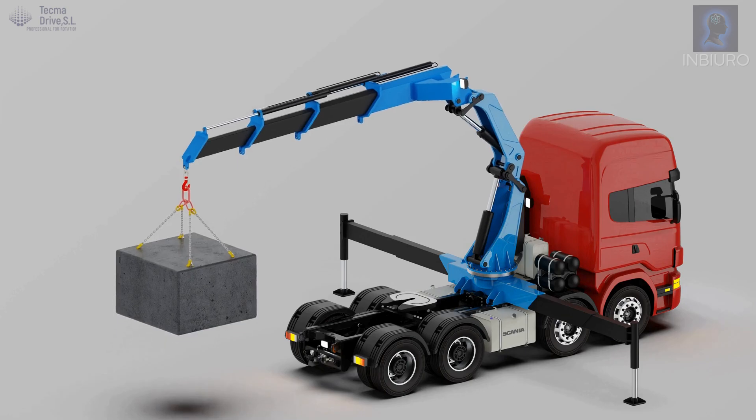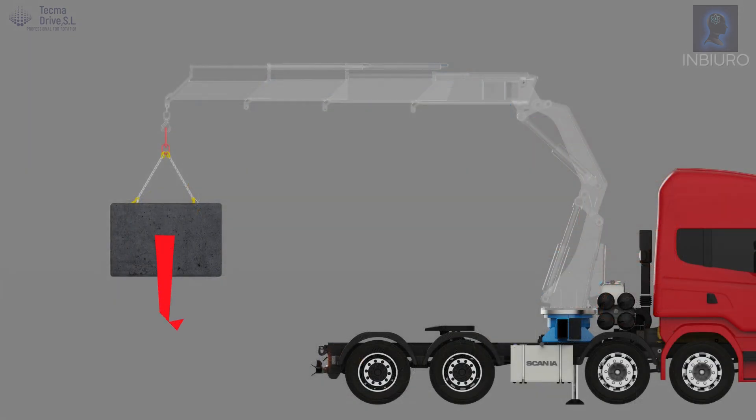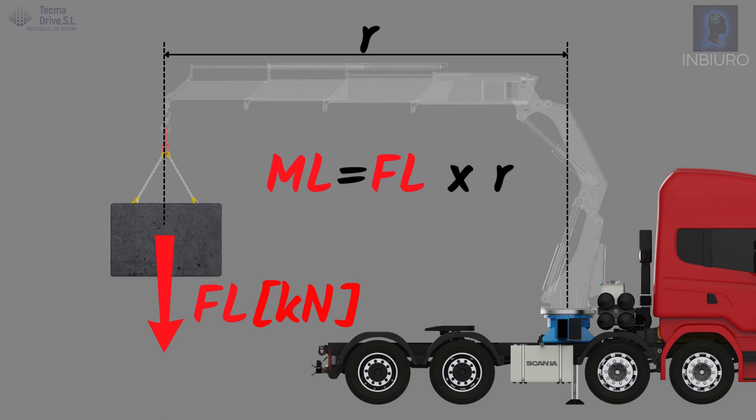Let's move on to the calculations we need. The axial load on the bearing equals the lifted weight in kN, regardless of the distance from the bearing. The tilting moment equals the same load multiplied by horizontal distance to the bearing.